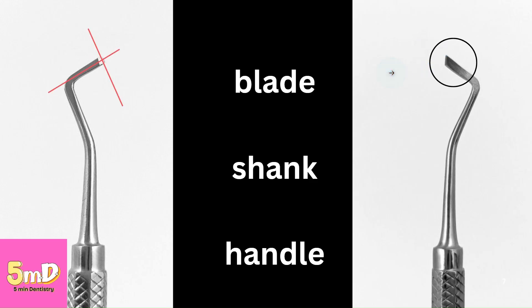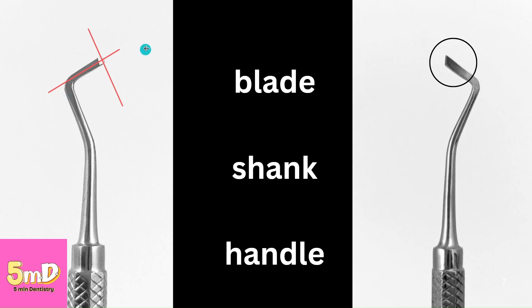What differs between them? The cutting edge is perpendicular to the long axis of the blade in the enamel hatchet, whereas it is not perpendicular in the GMT. When the cutting edge is perpendicular to the long axis of the blade, you only have three numbers in the instrument formula.